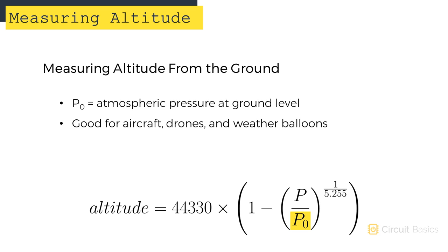If you want to know your altitude from the ground, you can use the atmospheric pressure measured from the ground at your current location. You might use this measurement if you're building a weather balloon or drone, where you want to know the height of the sensor off the ground.